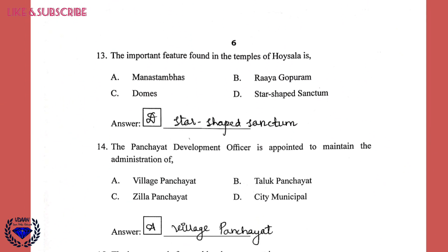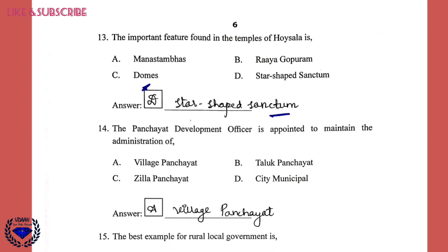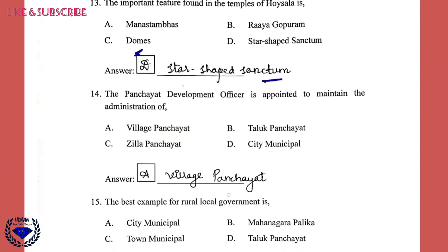Question 13: The important feature found in the temples of Vaishwara is option D — a star-shaped sanctum. Sanctum means Garbagudi. Question 14: The Panchayat Development Officer is appointed to maintain the administration of option A, village panchayat.